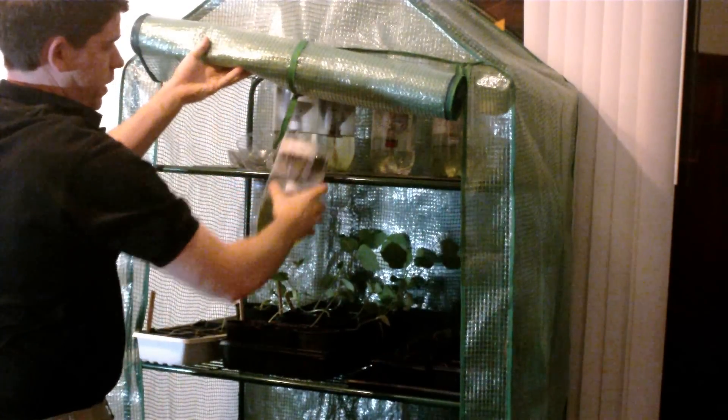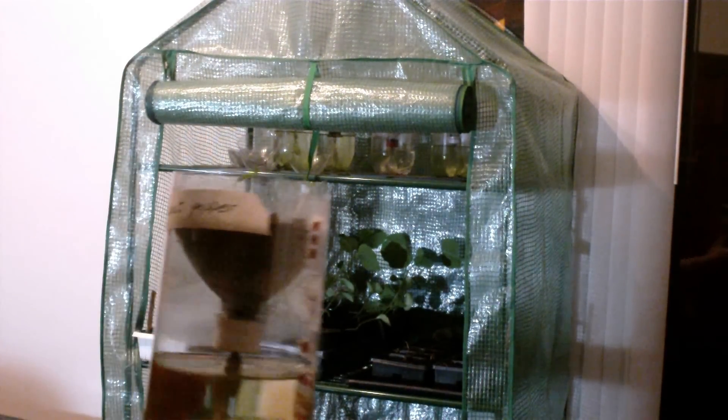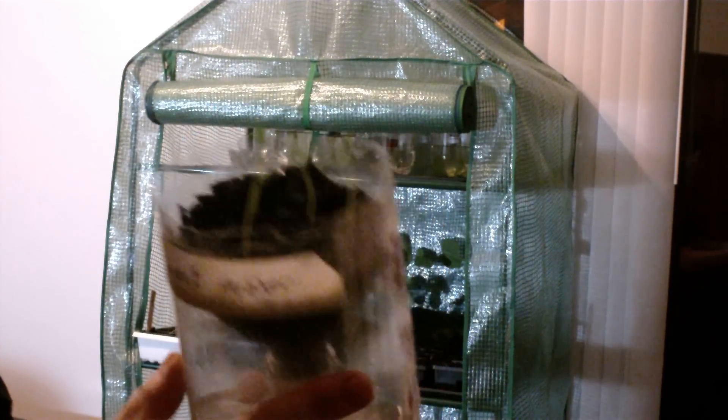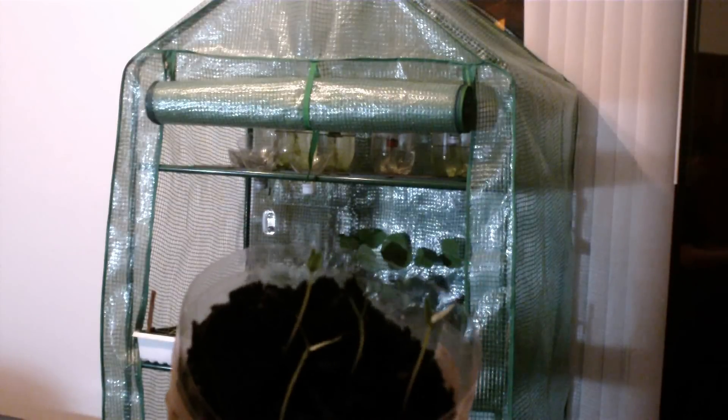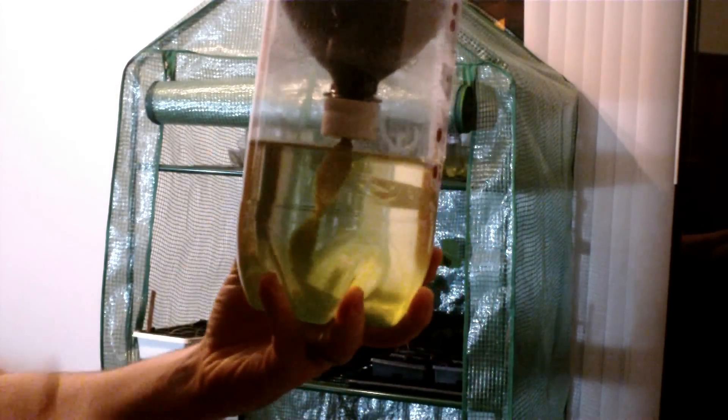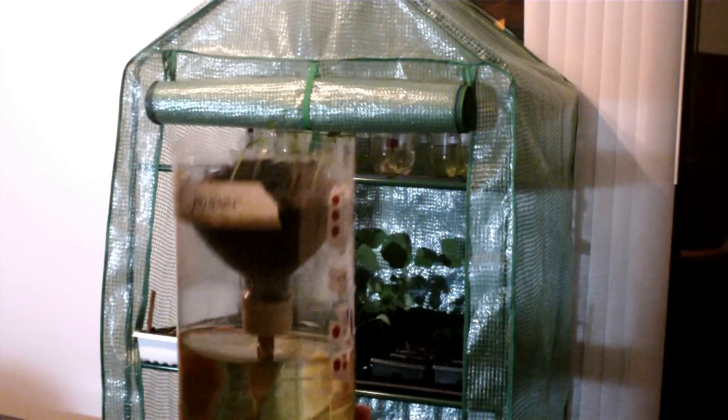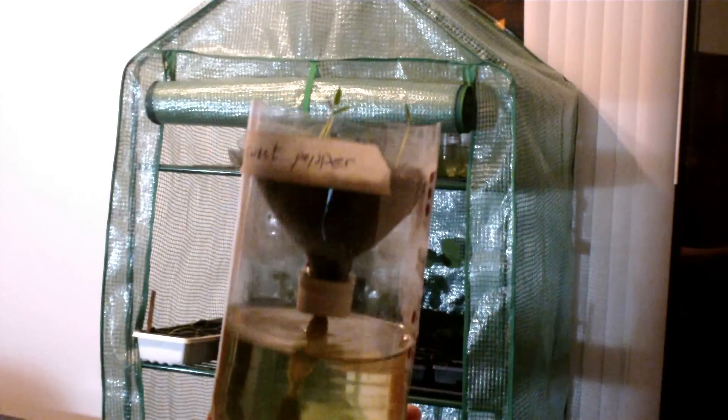I think the best thing to do is the wicking two-liter bottle. I'll show you a wicking two-liter bottle here. This bottle has some sweet peppers in it with several peppers already growing, and I never have to refill this water. It's a really simple two-liter bottle—chop off the top, flip it over, and put your soil in there.